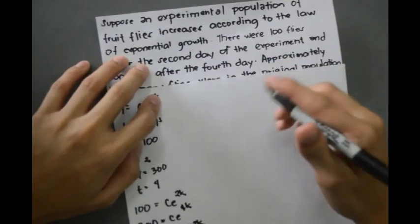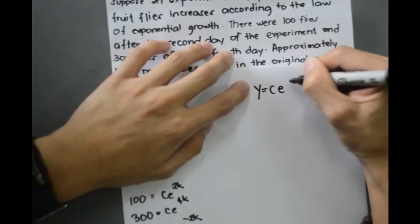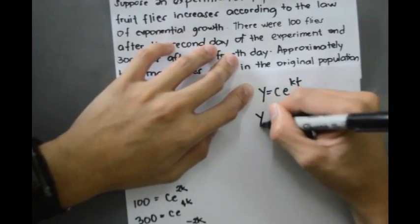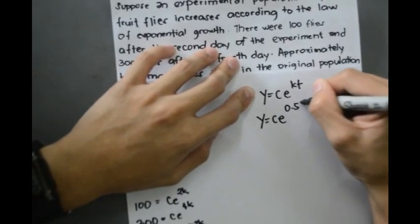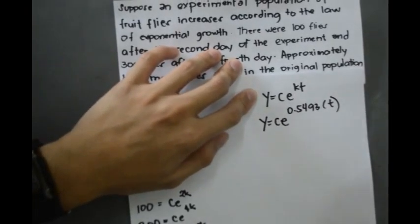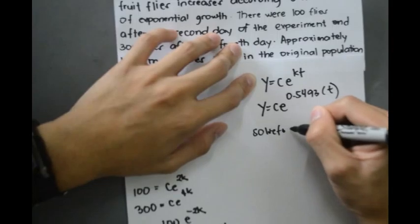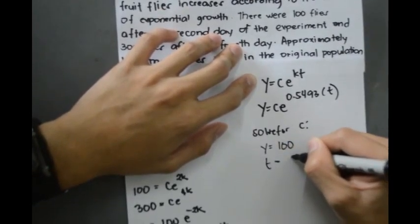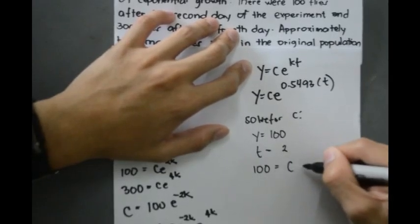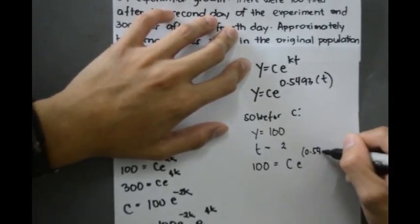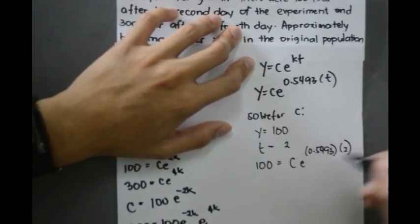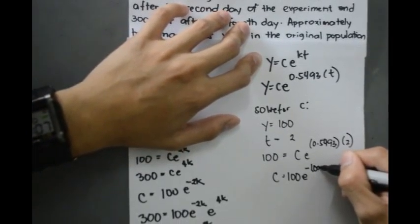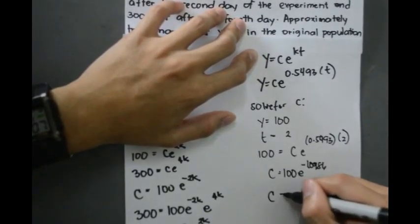The exponential growth model is y equals c times e raised to kt, substituting k equals 0.5493: y equals c times e raised to 0.5493t. To solve for c, apply the condition y equals 100 when t equals 2: 100 equals c times e raised to 0.5493 times 2, giving c equals 100 times e raised to negative 1.0986, which is equivalent to c equals 33.